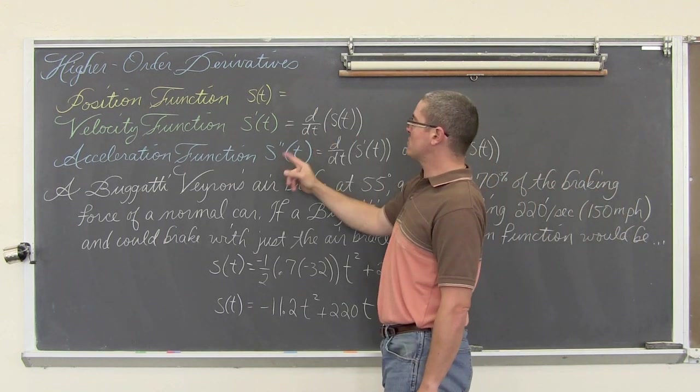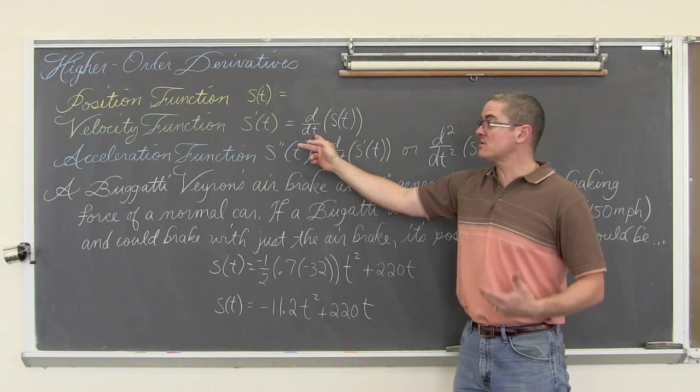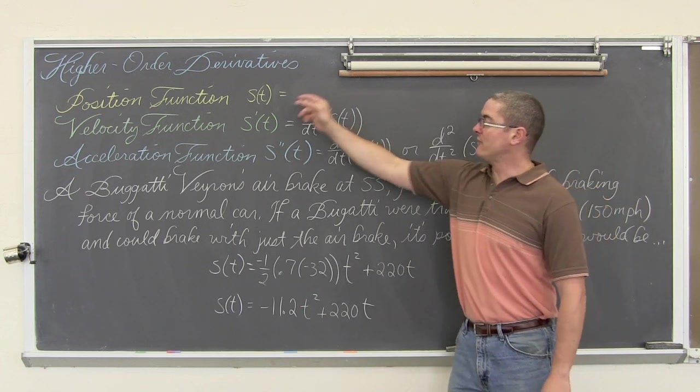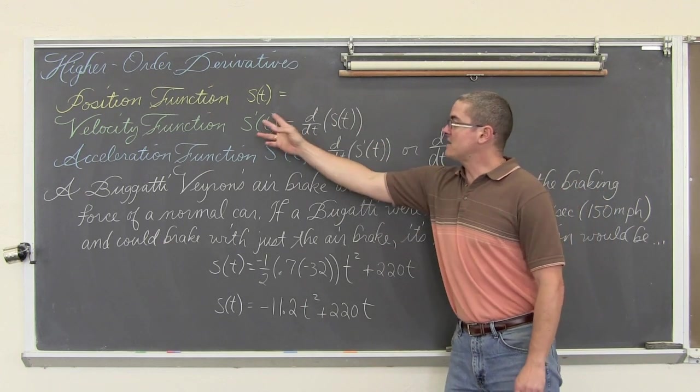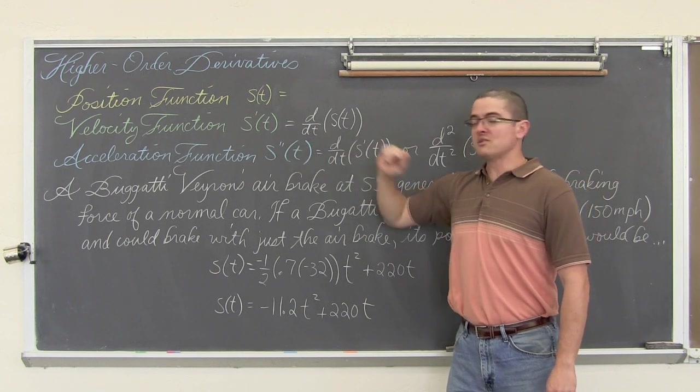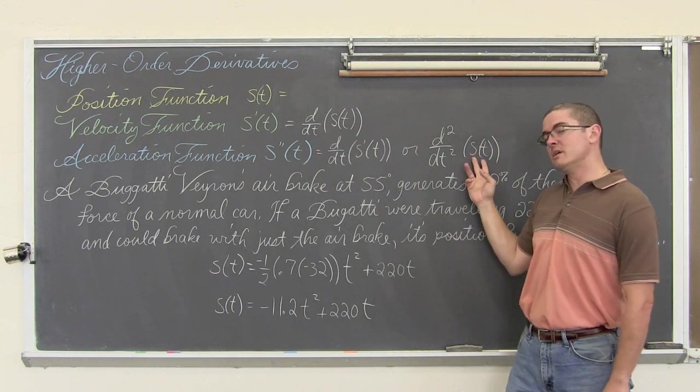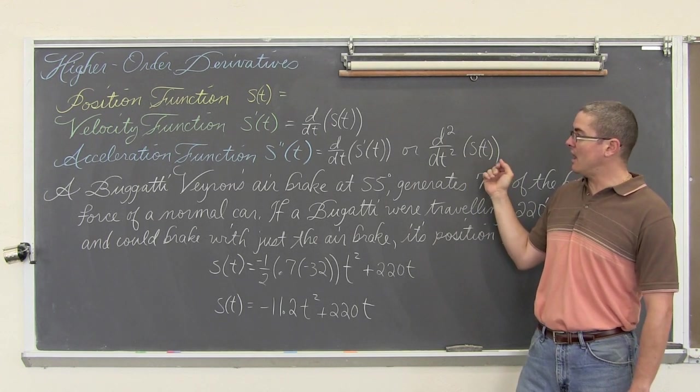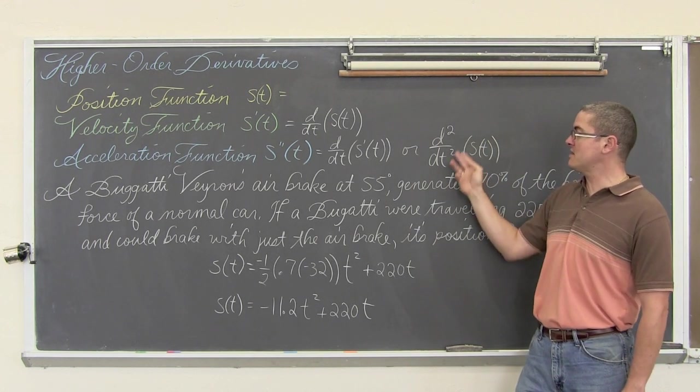That is the acceleration of the object as opposed to its velocity. So we can take a function, we can take its derivative, in this case our independent variable is t, so the derivative with respect to t of the original function is our first derivative. We can take that first derivative and find the derivative again and get the second derivative. Or the notation is take the original function s(t), in this case our position function, and find the second derivative.